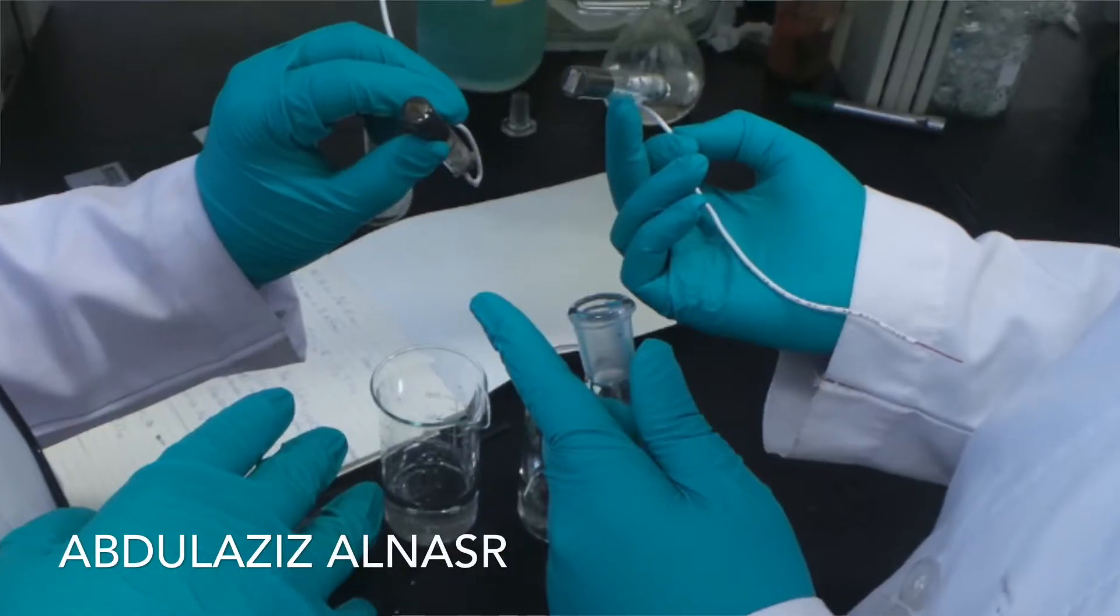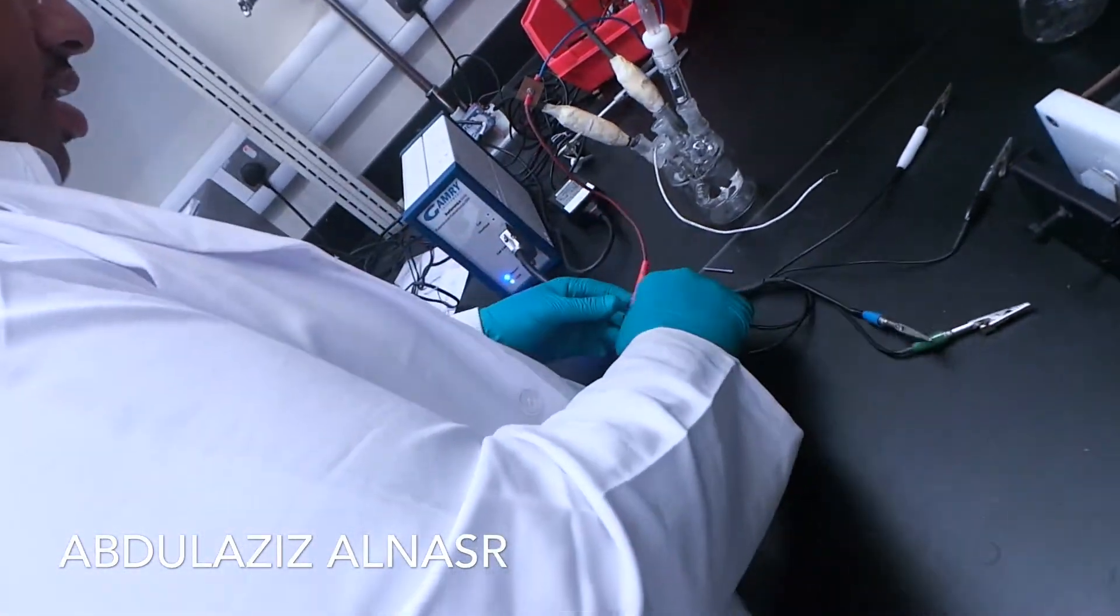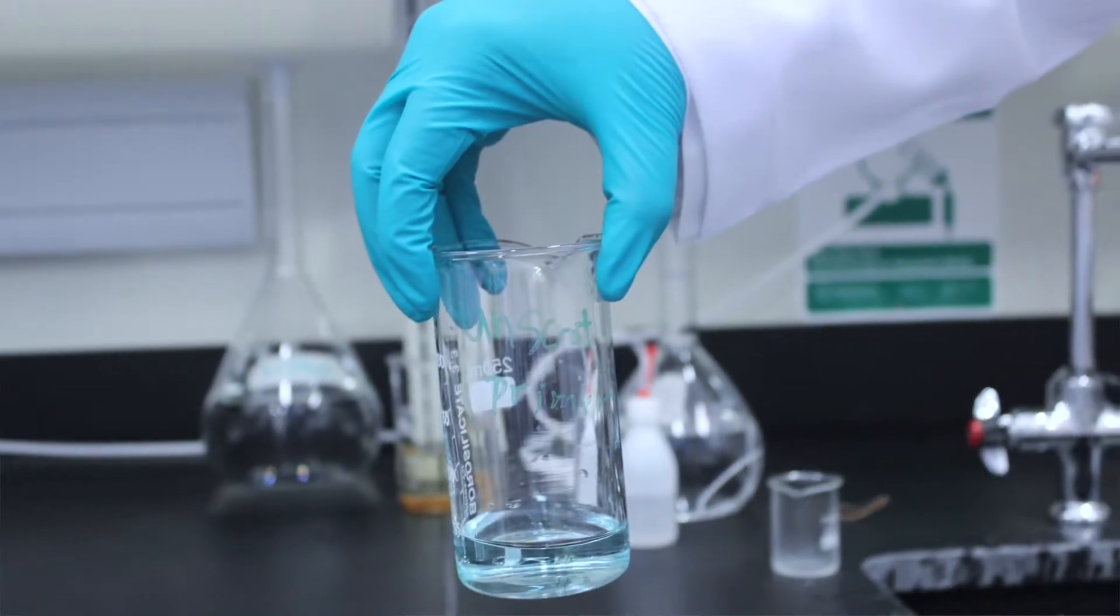What we did is we took both electrodes. We took the first one and tested it with nothing on it, then we tested it with copper nanoparticles on it. We just put it in copper sulfate for 30 minutes. After that, we took both of the electrodes and put them in benzotriazole for two hours.